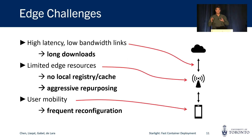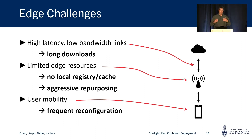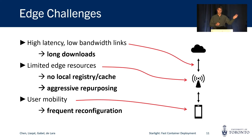Additionally, edge computing brings its own challenges to this equation, particularly high latency and low bandwidth links that make downloading container images very slow. On the other hand, resource limitations at edge and local data centers mean that there is usually no local registry or cache in many settings. Moreover, this encourages aggressive repurposing of nodes, which again increases the need for container provisioning. And user mobility means that we may have to reconfigure local data centers and edge data centers very quickly.